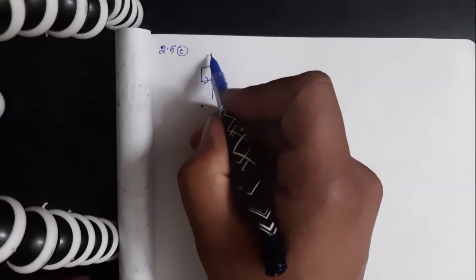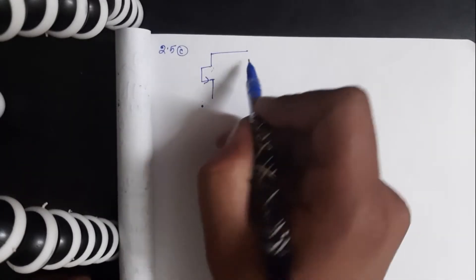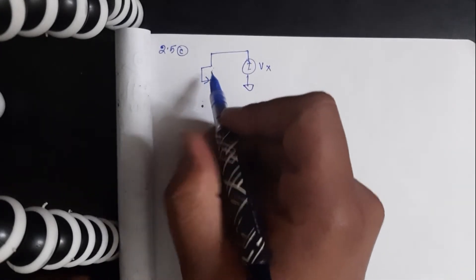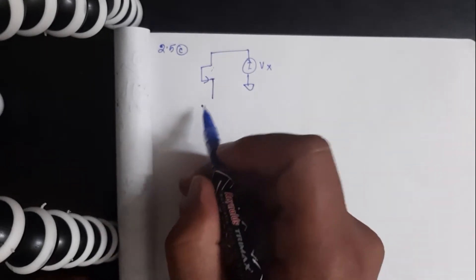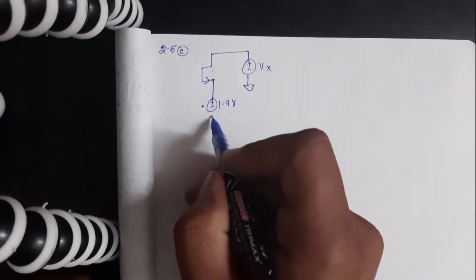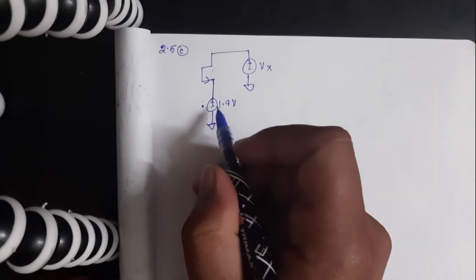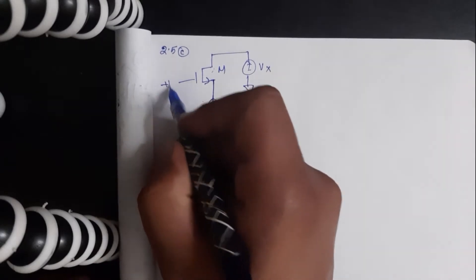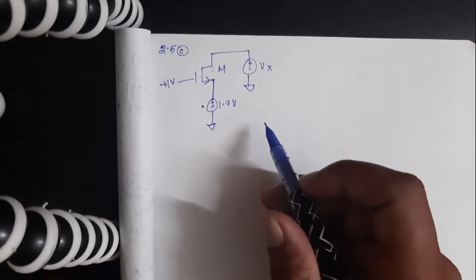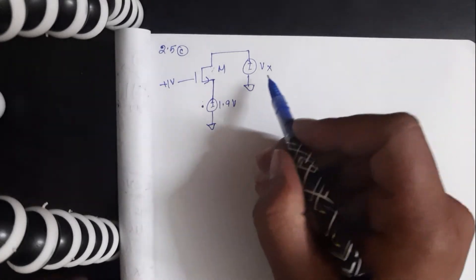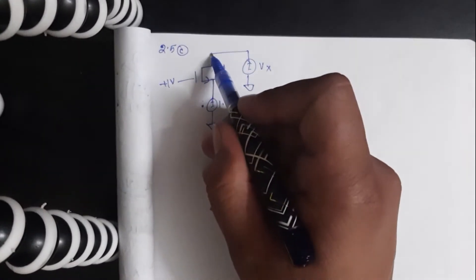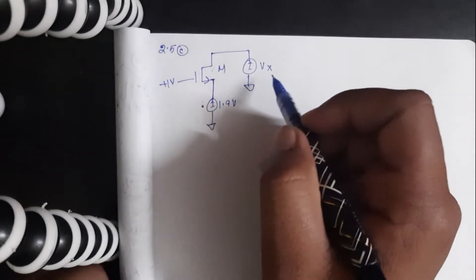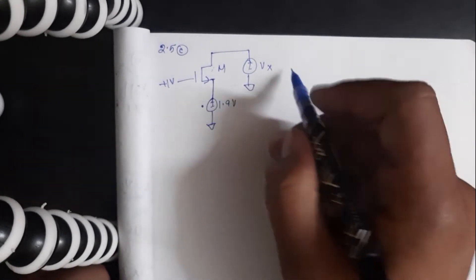So this is the circuit. We have VX connected to one of the terminals, 1.9 volts connected to the other terminal, the gate is connected to plus 1 volt. This is similar to the previous question. We are not sure which of these two nodes is a source or drain.